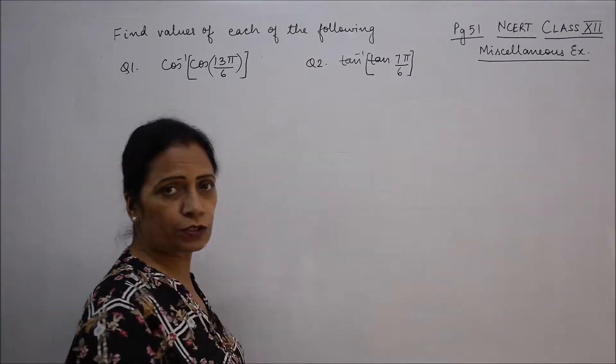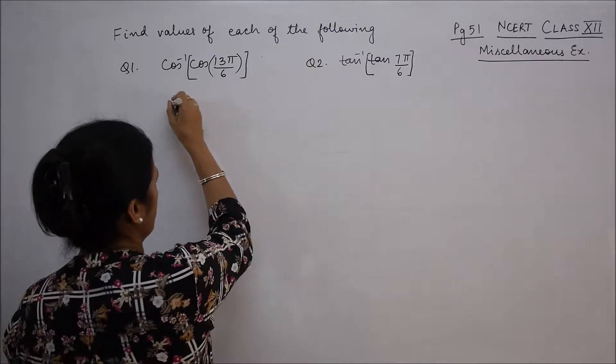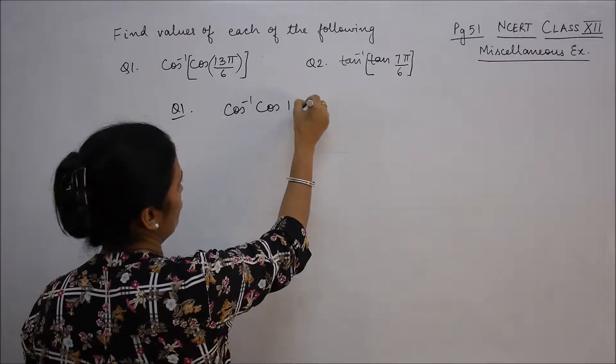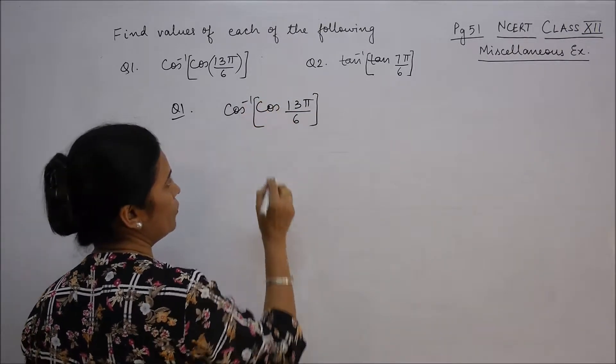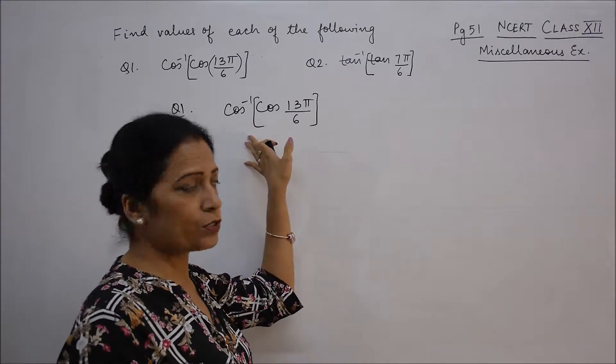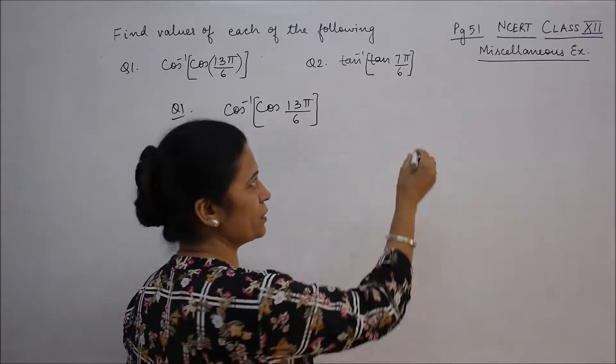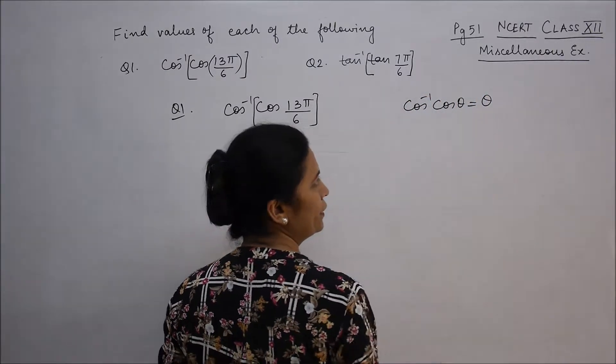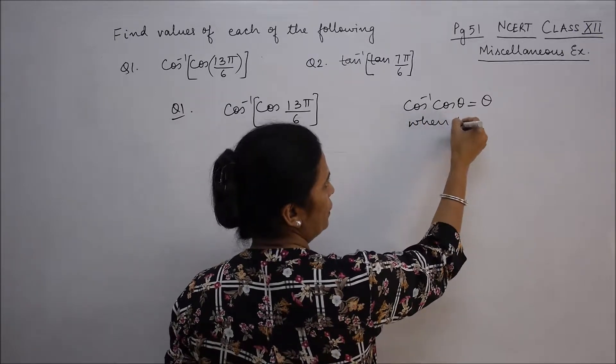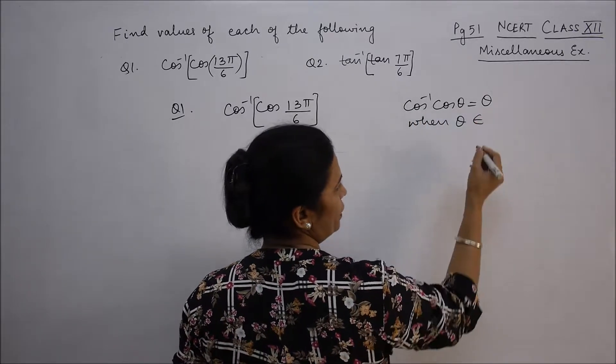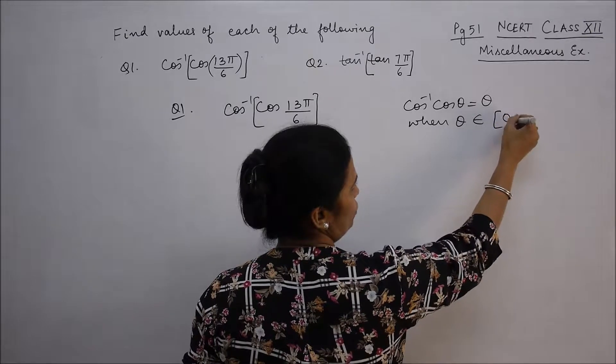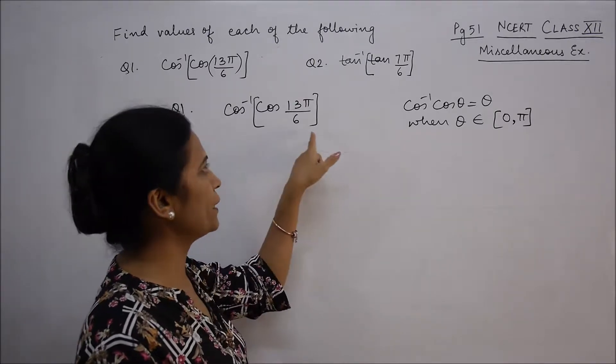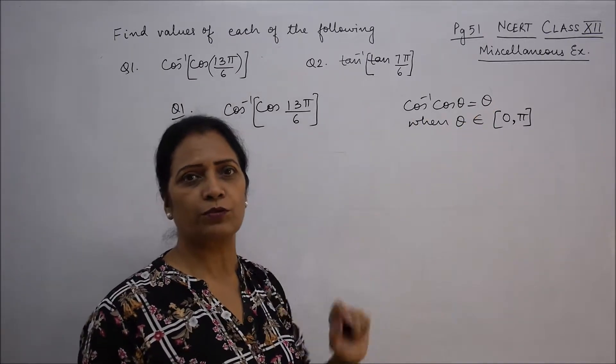So first we have cos inverse cos 13π/6. Now, cos inverse cos θ equals θ only when θ is in the principal branch. The principal branch is from 0 to π. So θ must be in 0 to π. Only then directly cos inverse cos θ will be equal to θ.